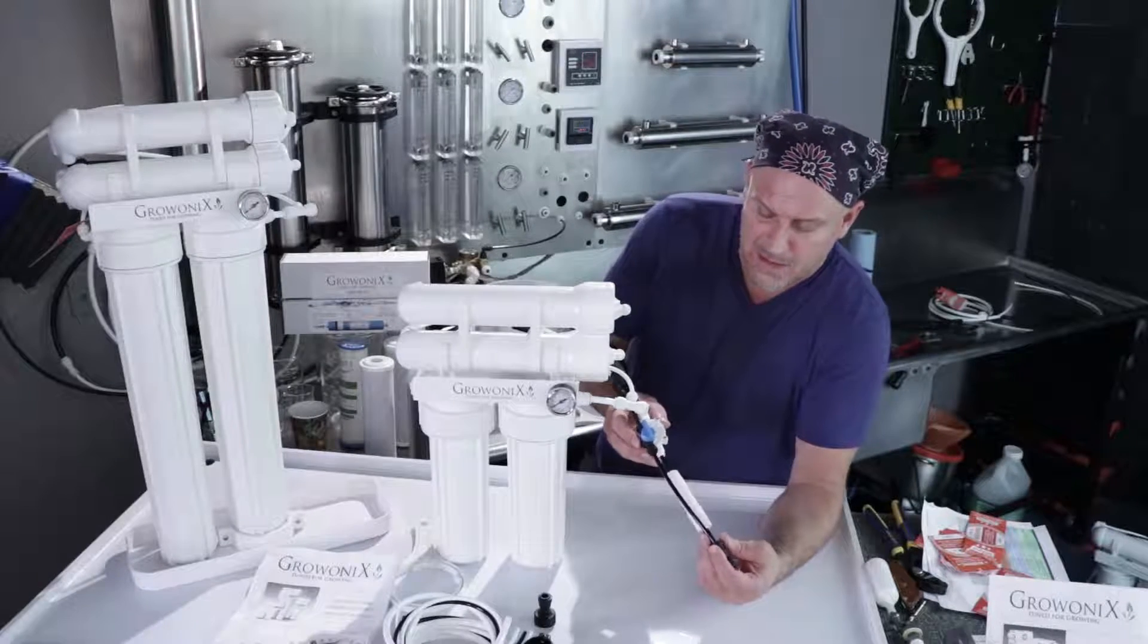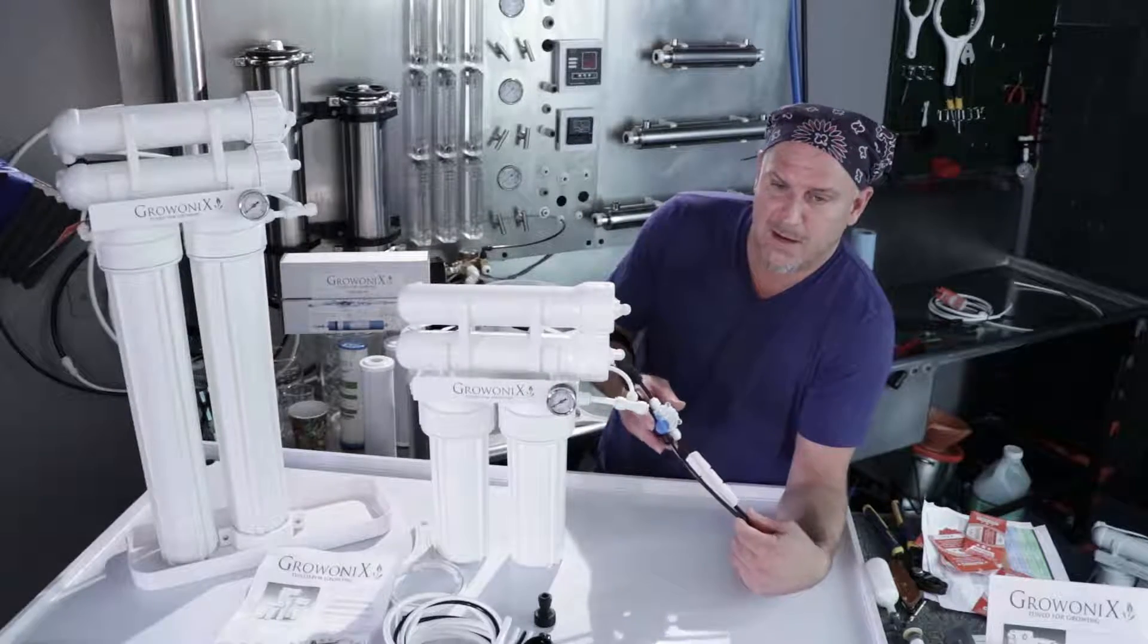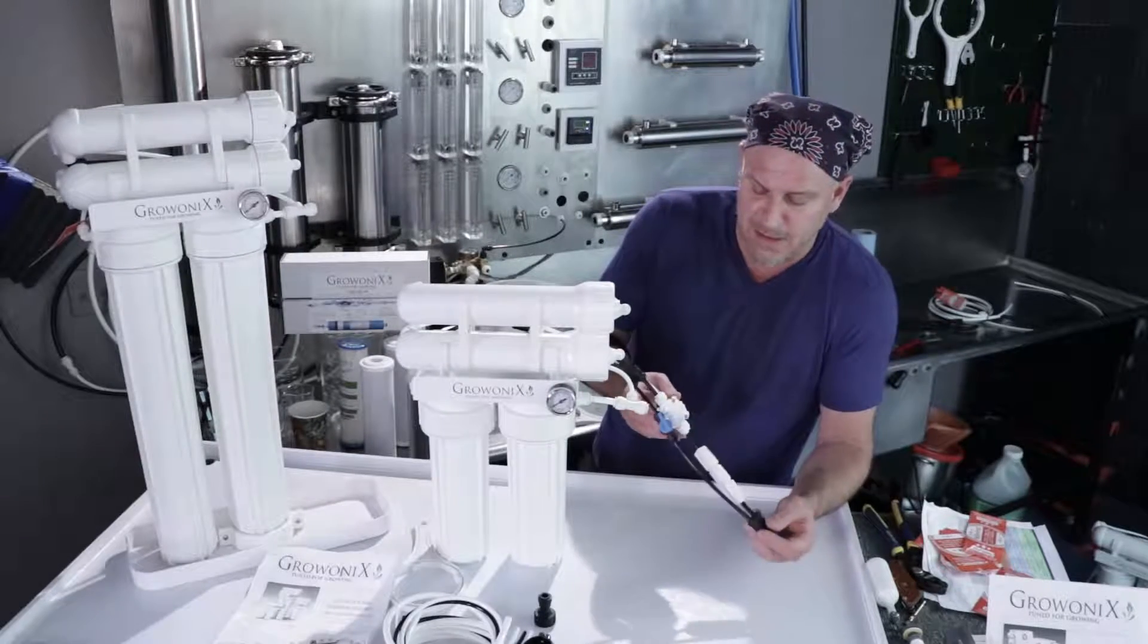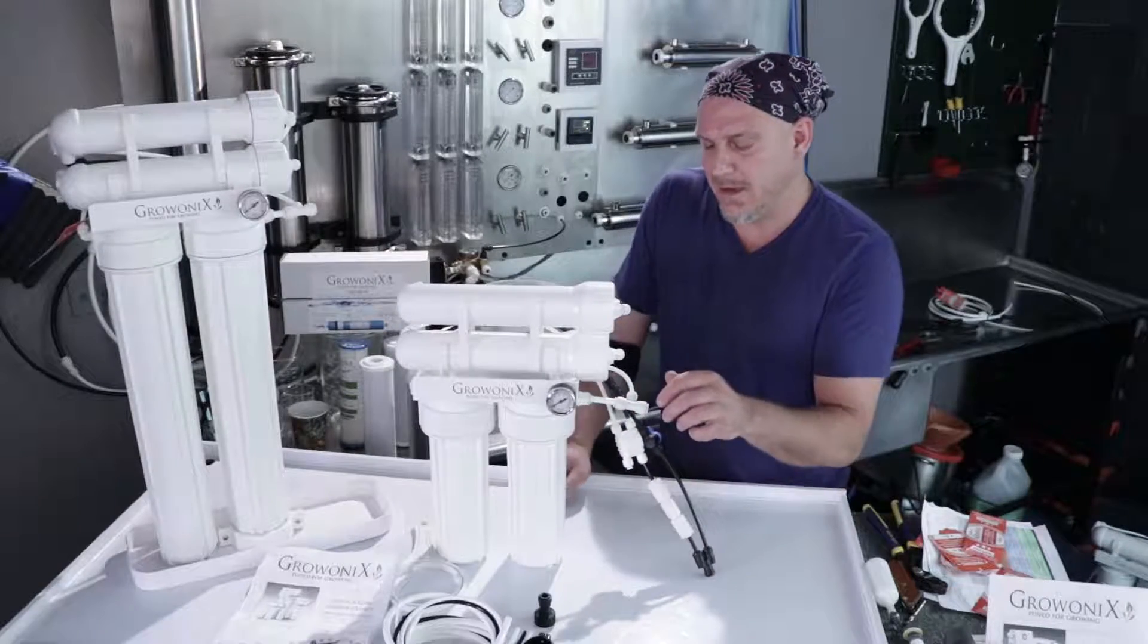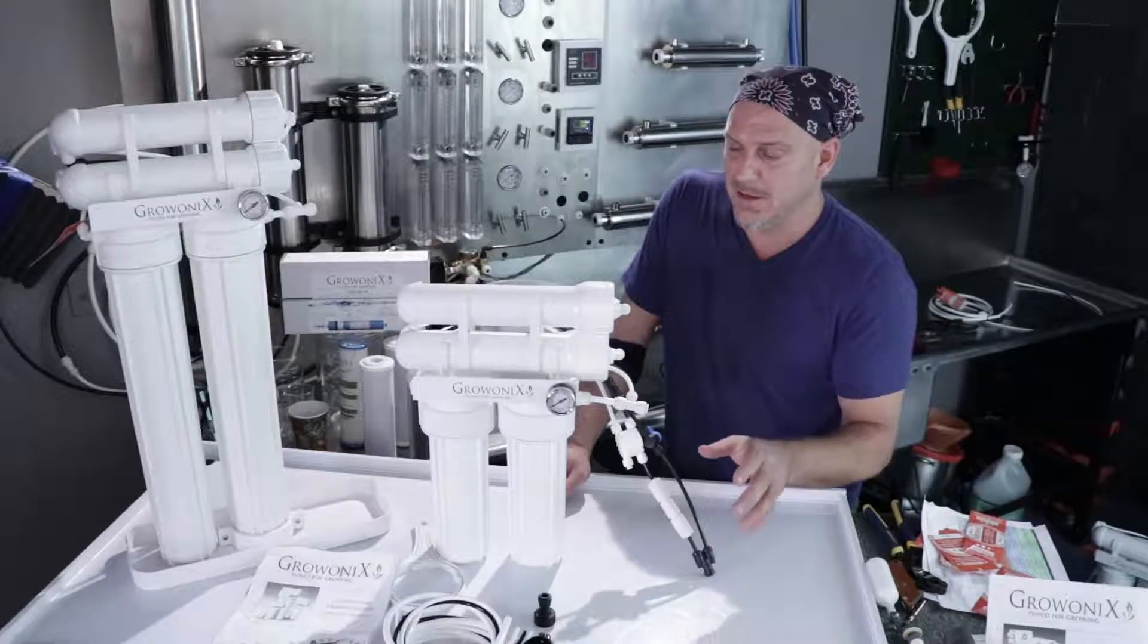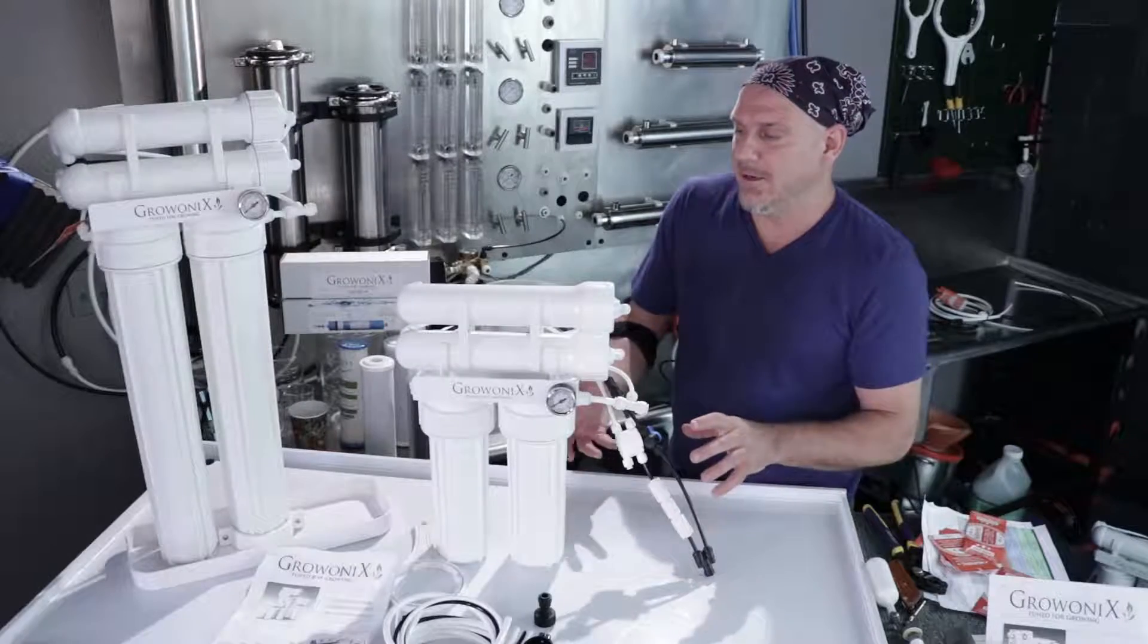I like to hook up the drain, the output of the RO first—that is the drain and the permeate out. This way, if I hook up the input water supply first and accidentally turn it on, I don't ruin the startup procedure or spill water everywhere. So let's do that.